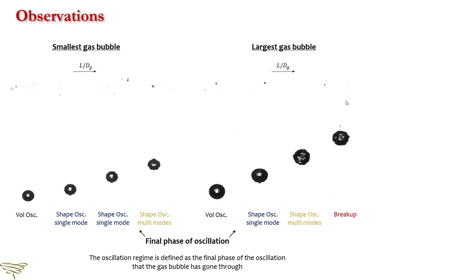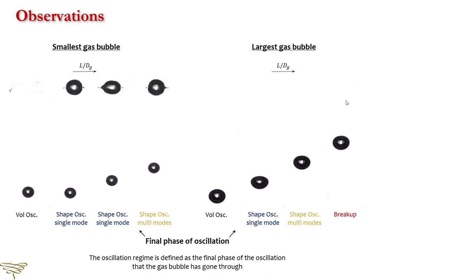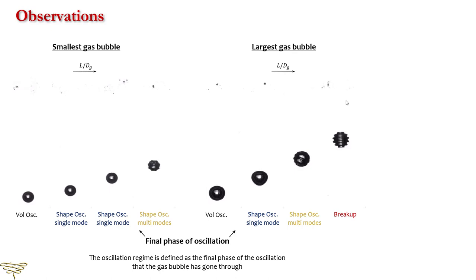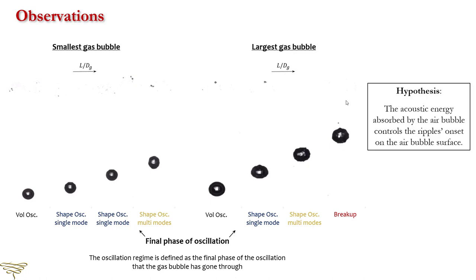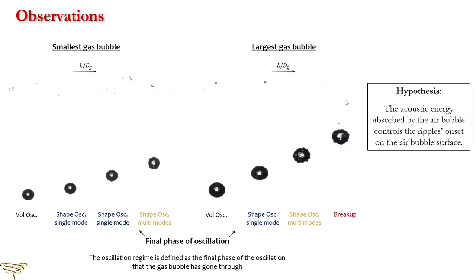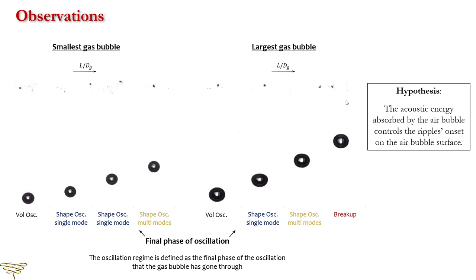These videos show the effects of air bubble size and relative distance between the bubbles on the air bubble oscillation regimes. When the air bubbles are closer to the acoustic source, they are more likely to oscillate in shape. Also, at the same distance from the acoustic source, the larger bubble has less intense oscillations. We hypothesize that the absorbed energy by the gas bubble controls the oscillation regime. To test this hypothesis, we need to develop a robust way of oscillation regime determination and a method to find the absorbed energy by the bubble.